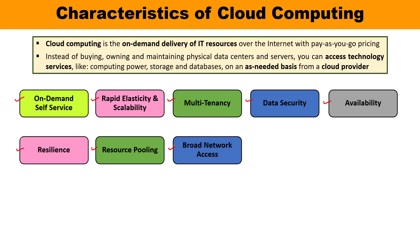The next characteristic is broad network access. Computing services are generally provided over standard networks and heterogeneous devices. A key characteristic of cloud is omni-presence — it is present everywhere and can be accessed from everywhere. Clients can access cloud data or transfer data to the cloud from any place, as long as they have a device and an internet connection.